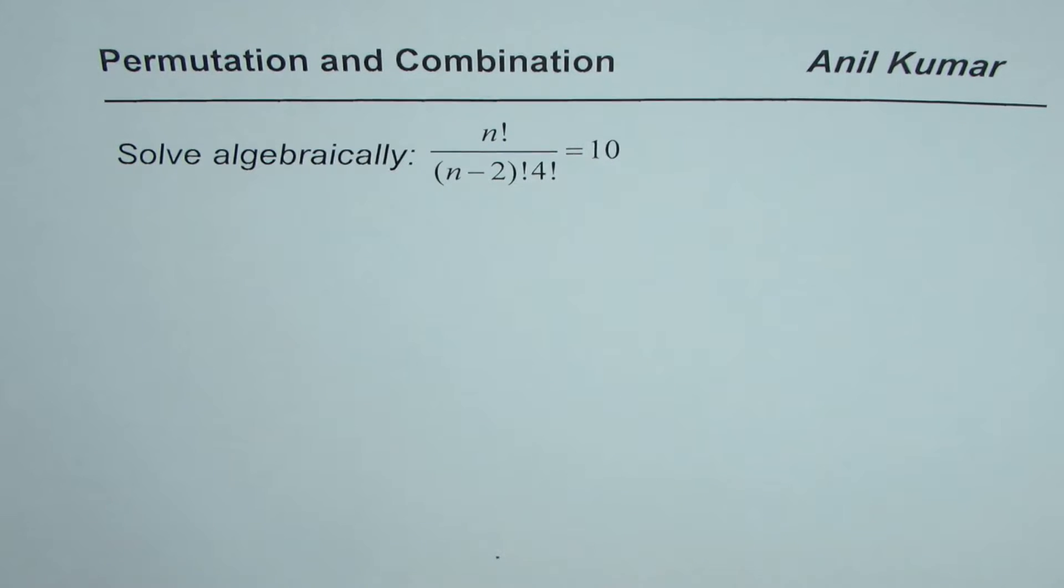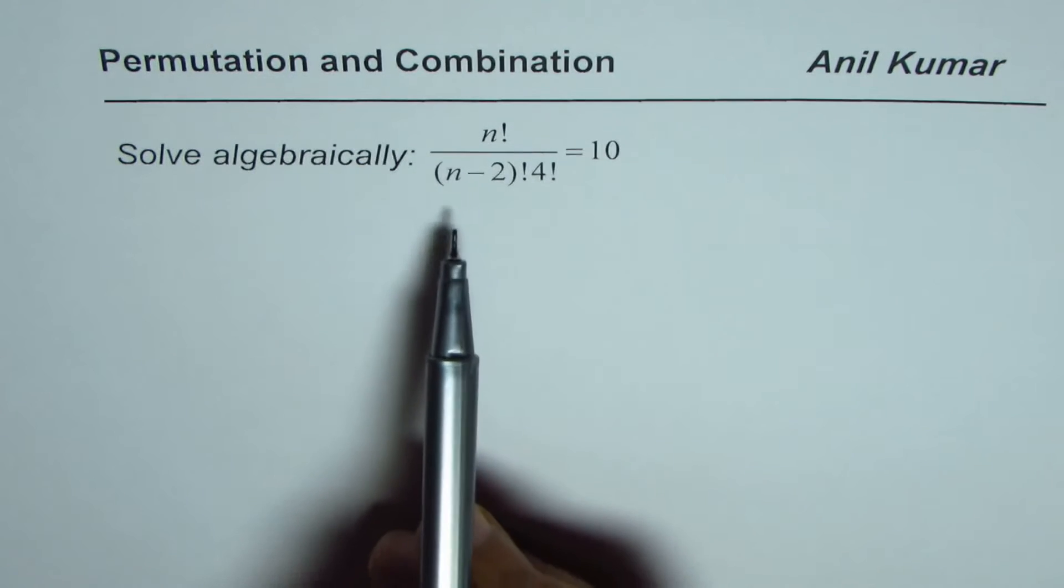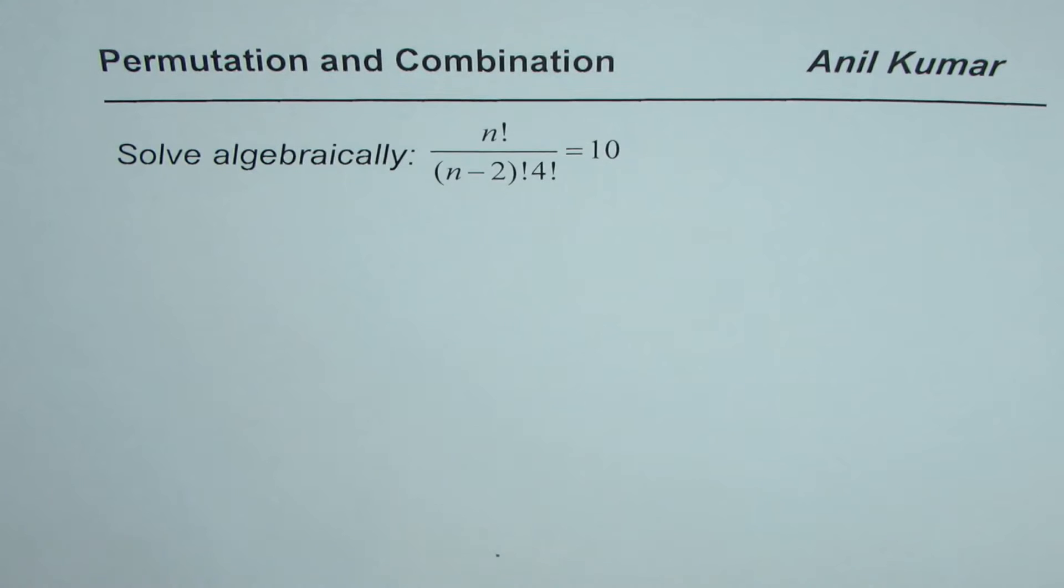In this particular question we need to solve algebraically n factorial divided by n minus 2 factorial times 4 factorial equals to 10.